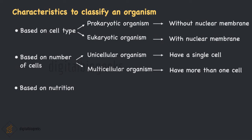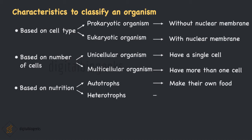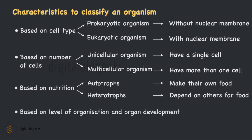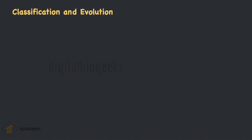The next classification is based on producing food by photosynthesis, that is based on their nutrition. Based on nutrition, organisms can be classified into two: autotrophs and heterotrophs. Autotrophs can make their own food by photosynthesis, while heterotrophs depend upon others for their survival. The next classification is based on the level of organization and development of organs. There are mainly four levels: cellular level, tissue level, organ level, and organ system level. At the tissue level, cells performing the same function unite to form tissues; at the organ level, tissues group together to form organs; and at the organ system level, organs group together to form an organ system.